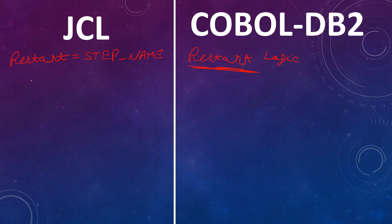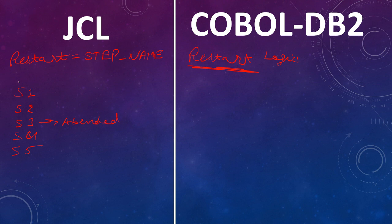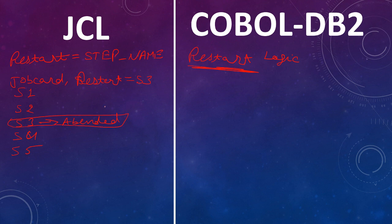In JCL, for example, you have one job with five steps: step one, step two, step three, step four, and step five. If your job is abandoned at step three, in the job card you will give the restart parameter equal to step three, so your job will start from step three. If you want to run the job from the top, you do not need to give the restart parameter in the job card.